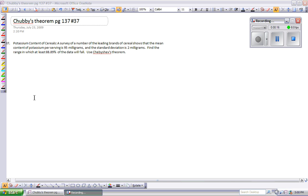We're going to see if this helps you guys out. So, what the book says is, a survey of a number of leading brands of cereal shows that the mean content of potassium per serving is 95 milligrams and the standard deviation is 2 milligrams. Find the range in which at least 88.89% of the data will fall. Use Chubby's Theorem.